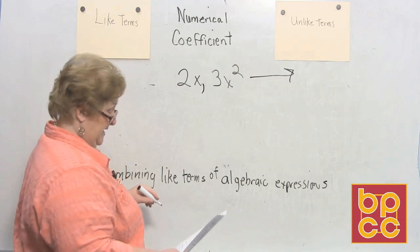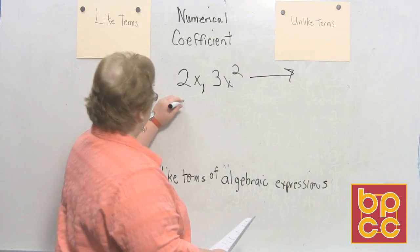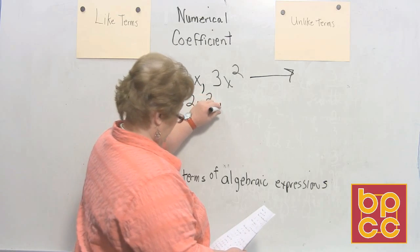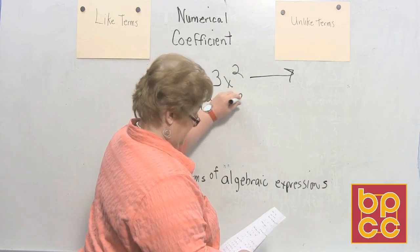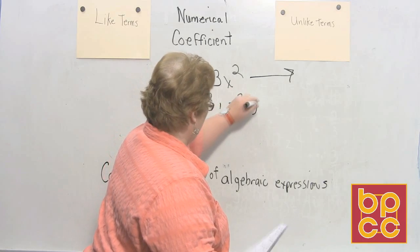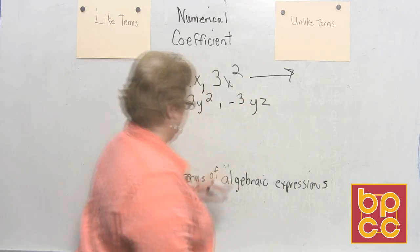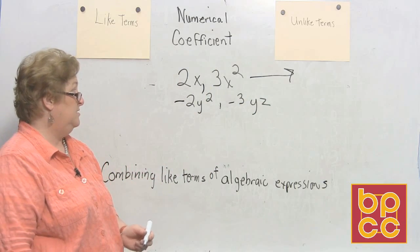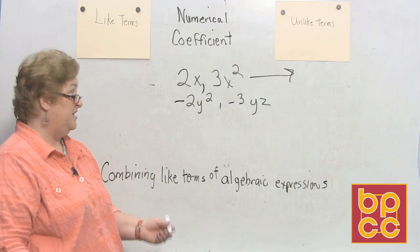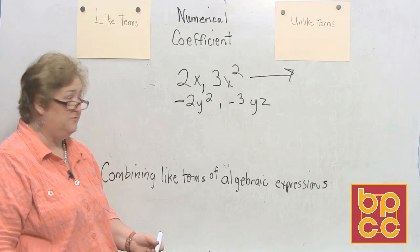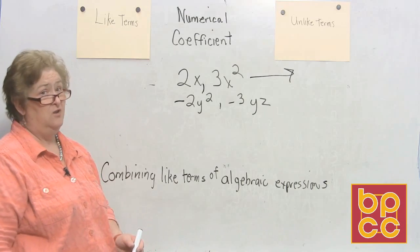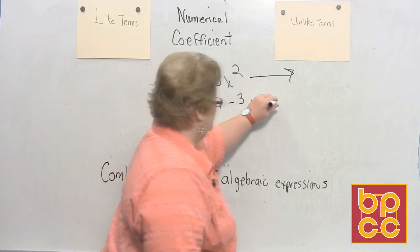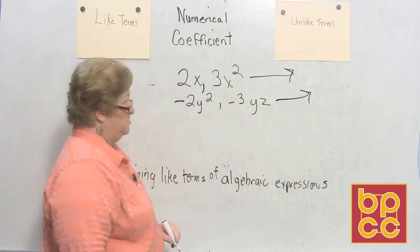Let's try another one. How about negative 2y squared and a negative 3yz? The coefficients are different — that doesn't matter. But the variables are different and the exponents are different. Unlike terms. Can't do a thing with them.